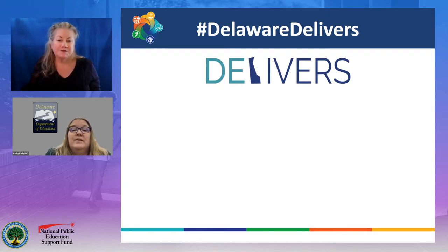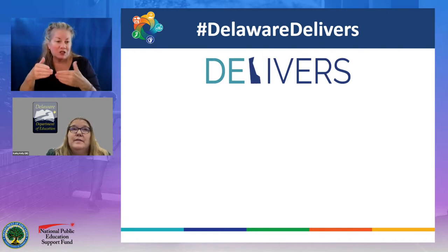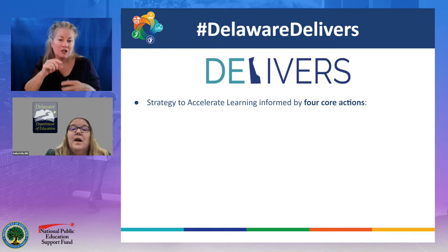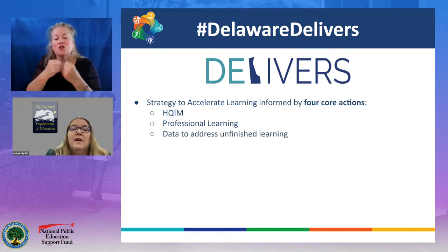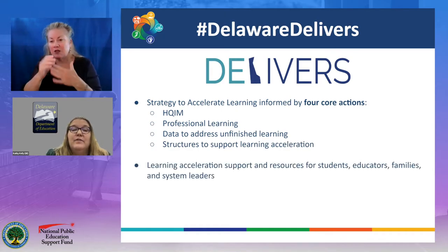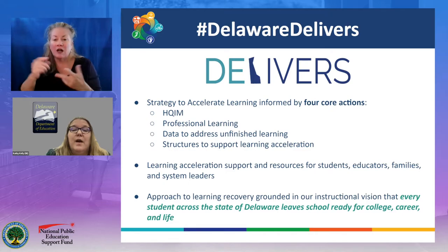As you've seen throughout this presentation, the words and logo "Delaware Delivers" appear. In the summer of 2021, we launched the hashtag #DelawareDelivers to capture our commitment to equitable access to high-quality, standards-aligned instruction for each student in the state. Delaware delivers a strategy to accelerate learning informed by four core actions: high-quality instructional materials, professional learning, data to address unfinished learning, and the necessity of structures to support learning acceleration. Delaware delivers learning acceleration support and resources for students, educators, families, and system leaders. And Delaware delivers an approach to learning recovery grounded in our instructional vision that every student across the state of Delaware leaves school ready for college, career, and life.